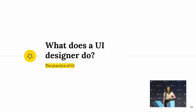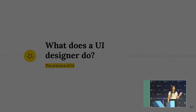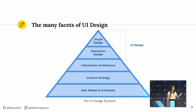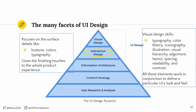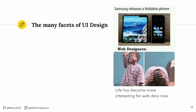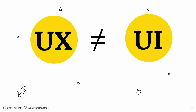What does a UI designer do? Using the same pyramid, this time we focus on the top two layers — interaction design and visual design. Yes, we will have colors, buttons, and typography, but the UI designer is a very skilled person who needs things like visual hierarchy, alignment, layout, spacing, readability, and more. And of course, let's not forget the different types of UI, even in our own devices.